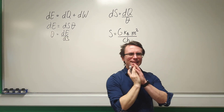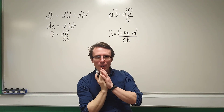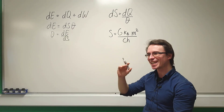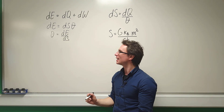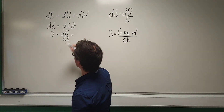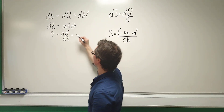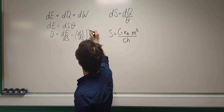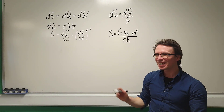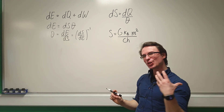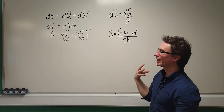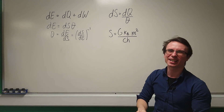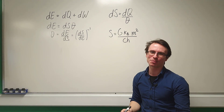Now I'm going to flip this expression and consider just the inverse: θ = (DS/DE)⁻¹. The reason for this is a mathematical trick — it will allow me to differentiate the entropy, because we already have an expression for the entropy of a black hole.